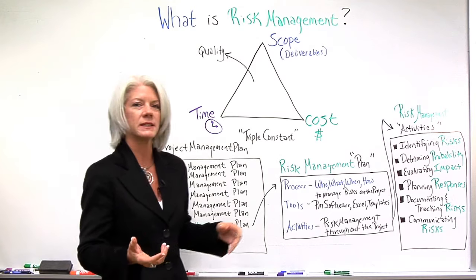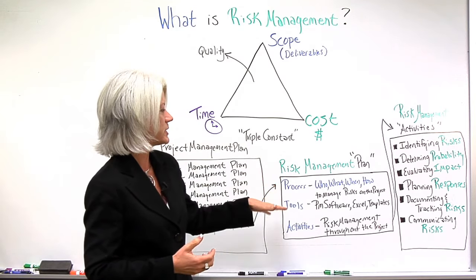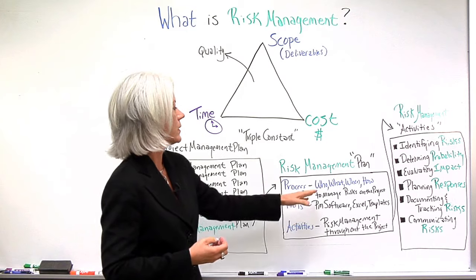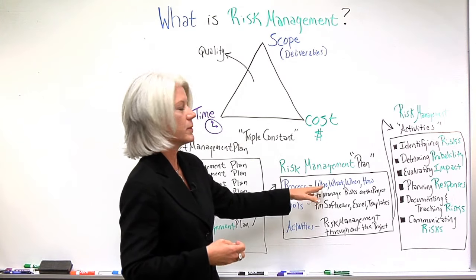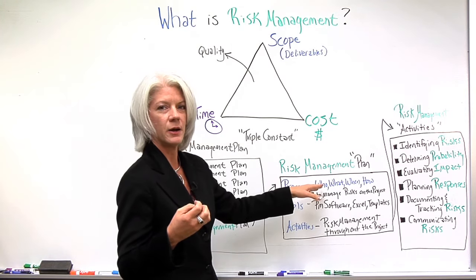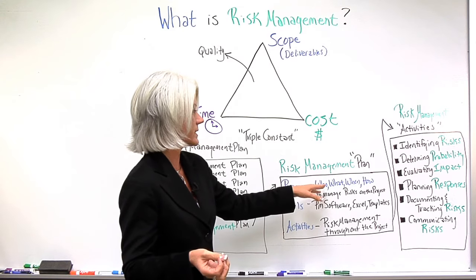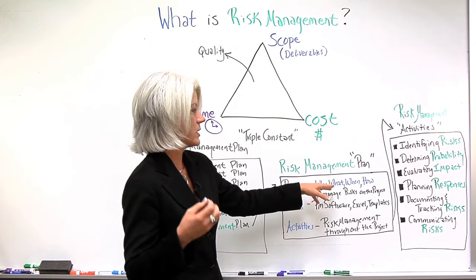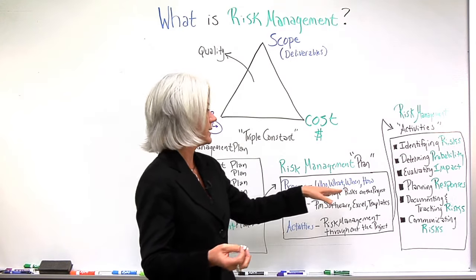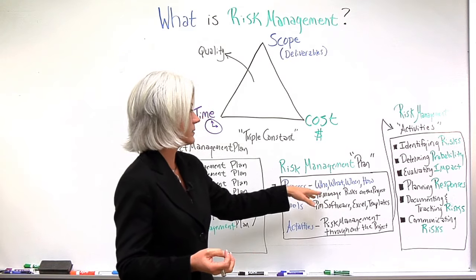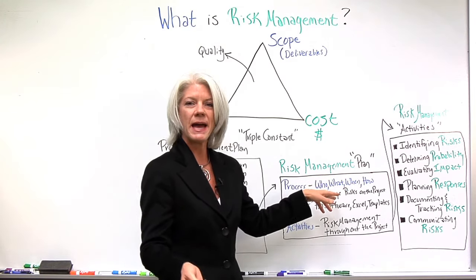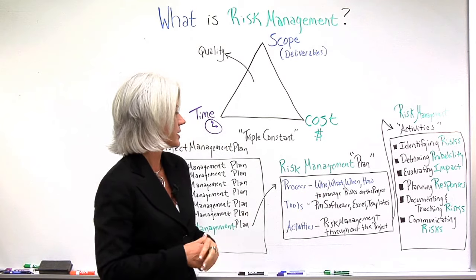What is entailed in the risk management plan is the process. We want to know who needs to know, who can interject risk into the project, what's the process, when do we do it, how do we do it — basically the who, what, when, and how to manage risk on the project.